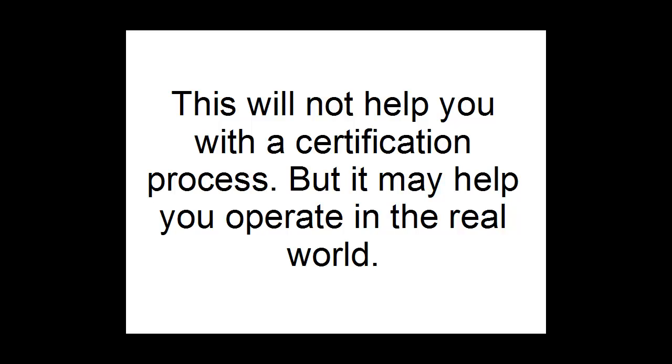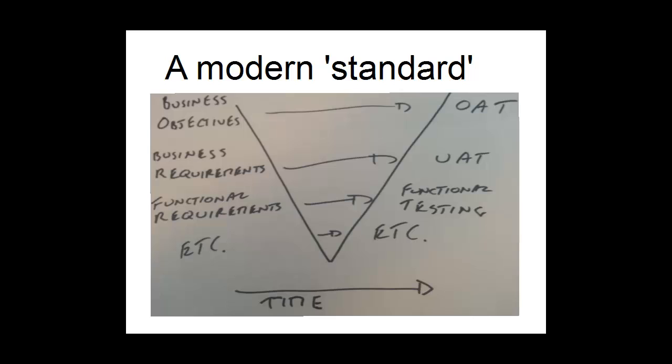To describe a modern V model testing process diagram: you've got various definition stages on the left and then various testing stages on the right. The testing stages map onto the definition stages — so business requirements might map onto UAT, and business benefit might map onto operational acceptance testing, etc. And this doesn't work. This wastes time and money and detrimentally affects everyone involved.